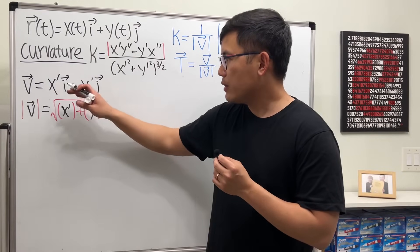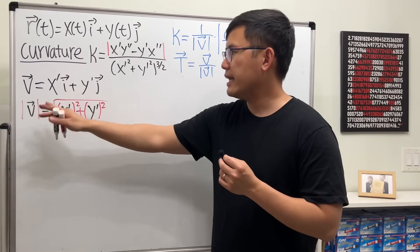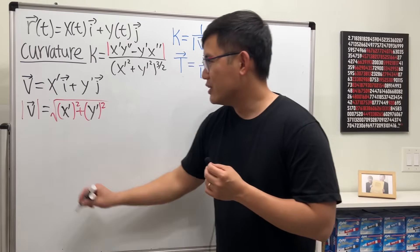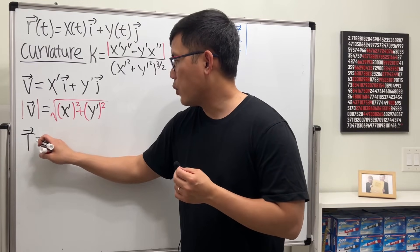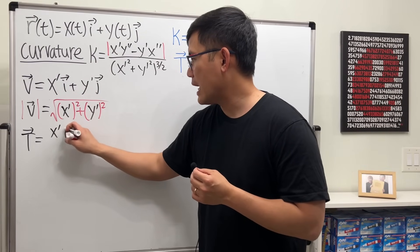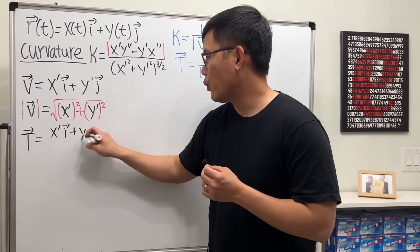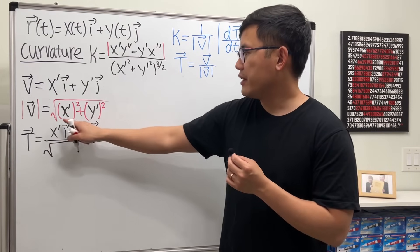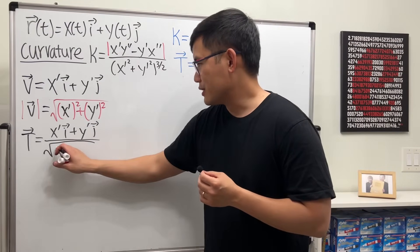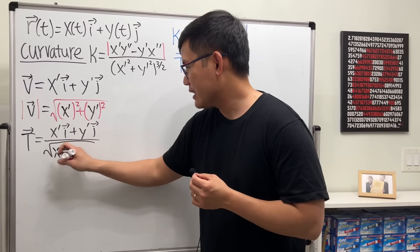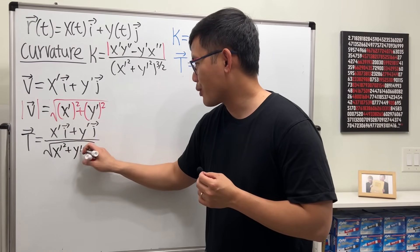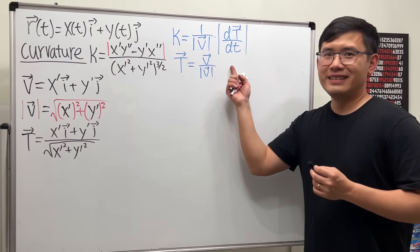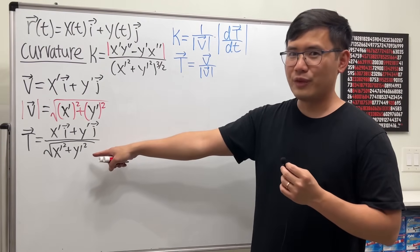To get the unit tangent vector T, we divide v by its magnitude. The unit tangent vector T is defined to be the velocity divided by the magnitude of that velocity. So capital T equals x-prime i plus y-prime j over the square root of x-prime squared plus y-prime squared. Now we have to take the derivative of this, which is a big fraction, so we need to use the quotient rule.